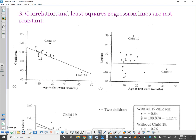Alright, correlation and least squares regression lines are not resistant. So I've got this age of their first word in months and their Gesell score. Now I'm talking about two different kids. I've got kid 19, who's up here, outlier, and kid 18, who isn't super far from the line, but is an outlier from the pack.